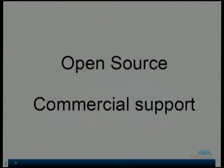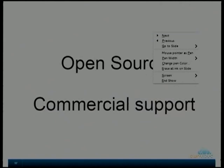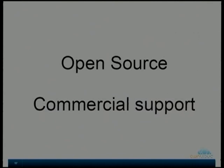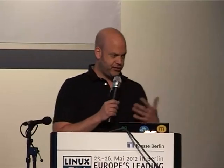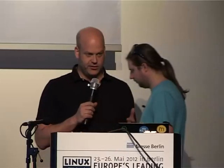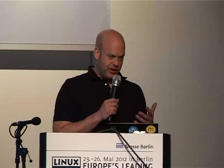OwnCloud is an open source project, which means AGPL. The interesting part is that you can actually run it on your own machine. So you can use all these great cloud services — synchronize your files, synchronize your calendar, synchronize your address book — but you don't have to give away your data. You can actually store your data on your own machine. That's the whole point: you have the functionality and the features, but without losing control over your data.